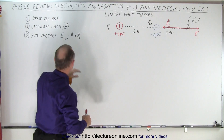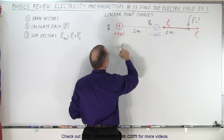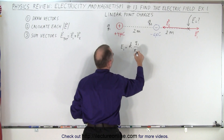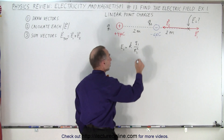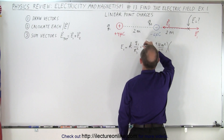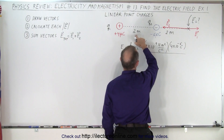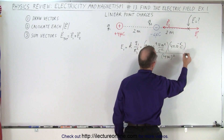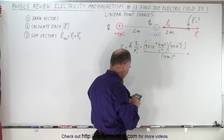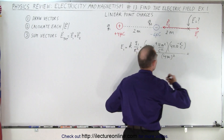Now we want to calculate the magnitude of each of these fields. The electric field magnitude due to the first charge equals K times Q1 divided by the distance squared — R1 squared. Plugging in the numbers: 9 times 10 to the ninth Newton meters squared per coulomb squared, multiplied by Q1 which is 4 times 10 to the minus 6 coulombs, divided by the distance squared — 2 meters plus 2 meters is 4 meters, squared. Using a calculator: 9e9 times 4e-6 divided by 4 squared equals...